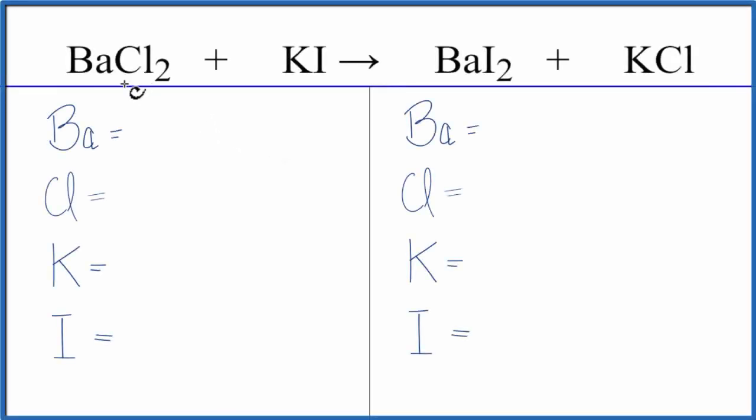To balance this equation, BaCl2 plus KI, that's barium chloride plus potassium iodide, let's count the atoms up on each side of the equation.